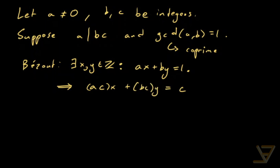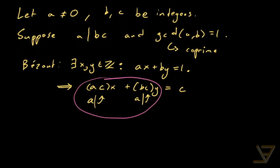And remember, A divides BC, so A divides the BCY term. And A clearly also divides AC. So that means A is going to divide the whole right-hand side, because it divides both terms. And that's going to mean that A divides C as well.